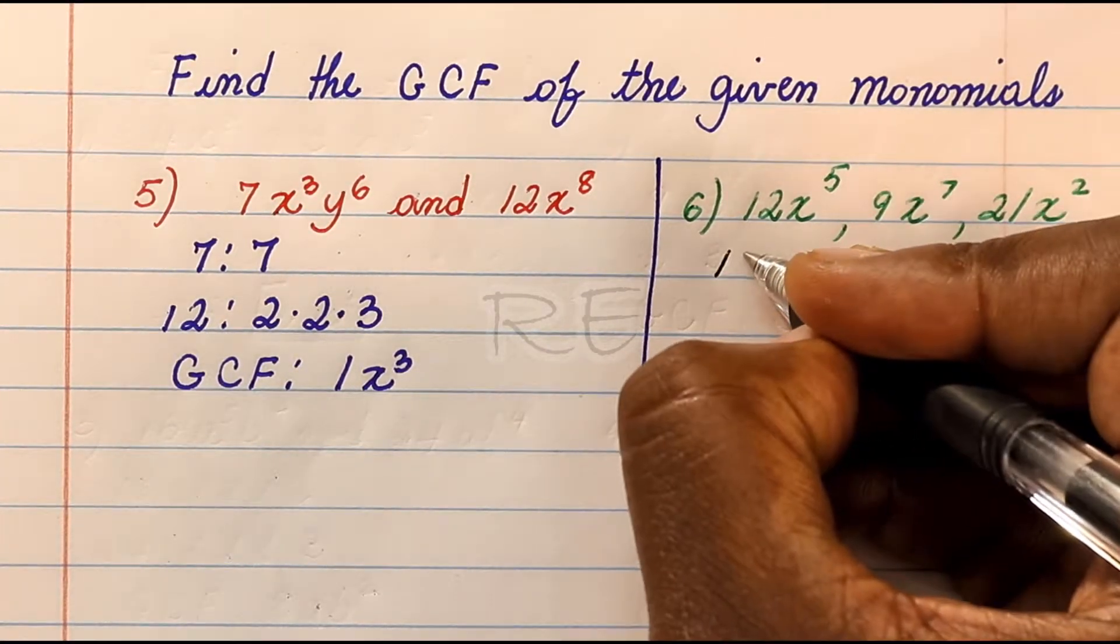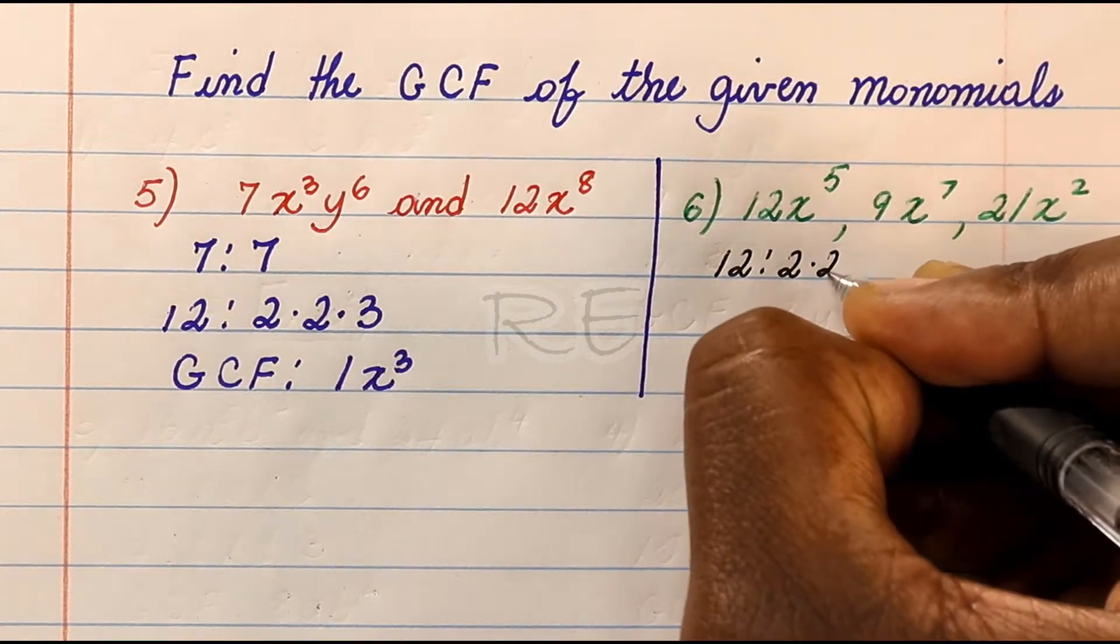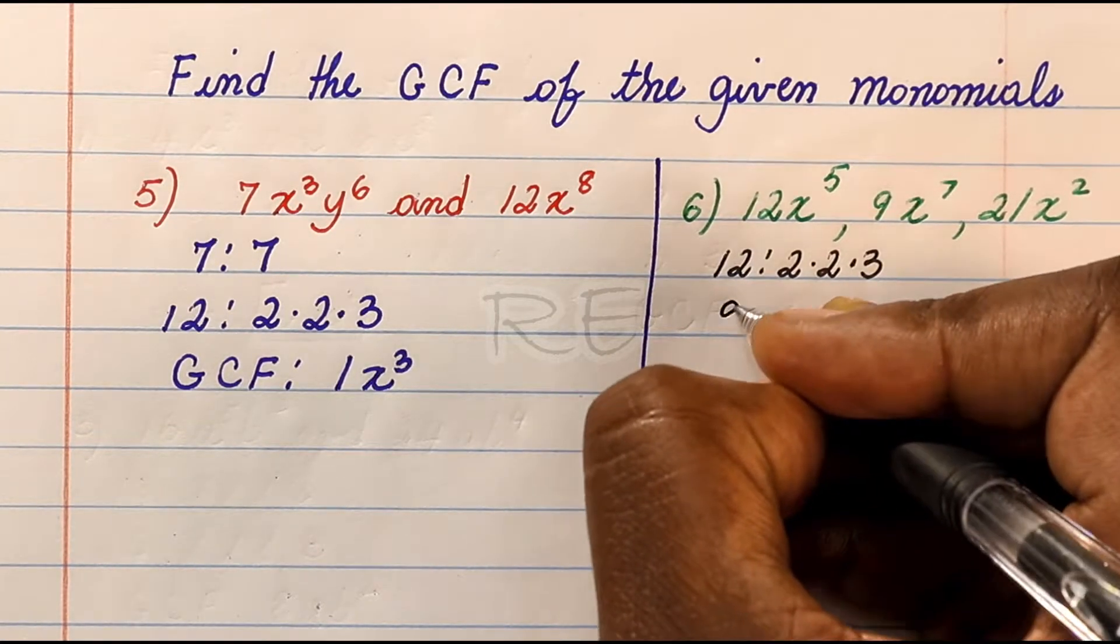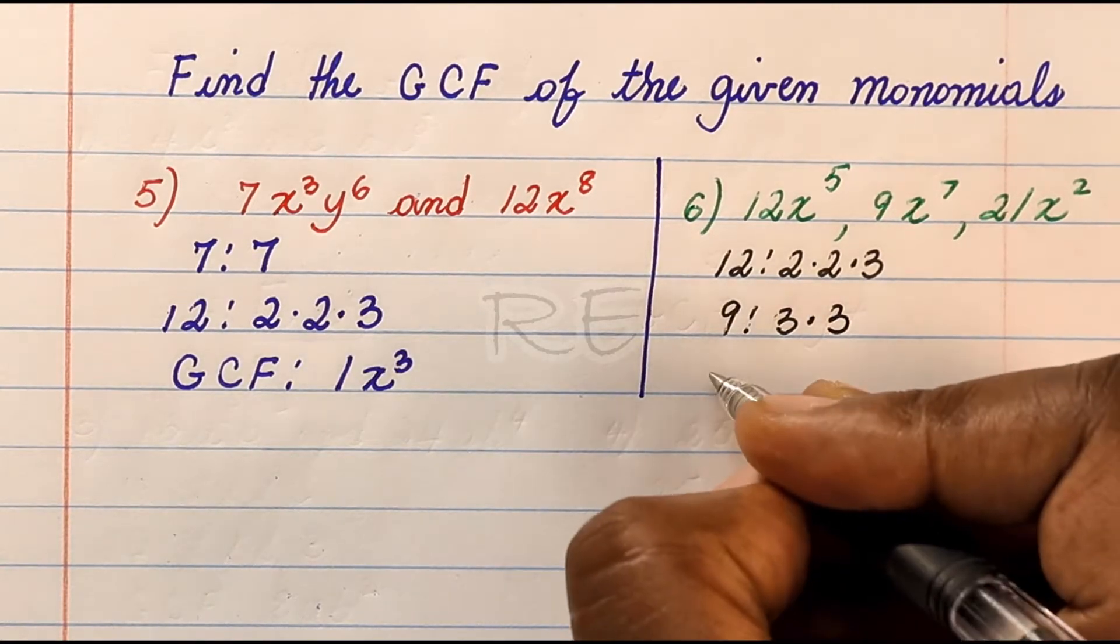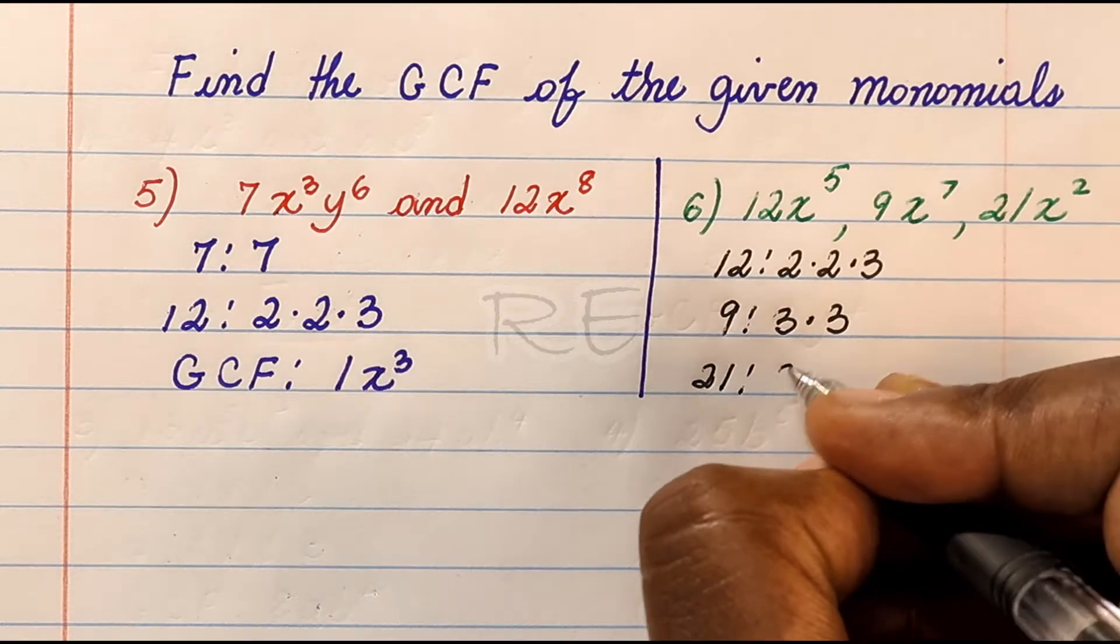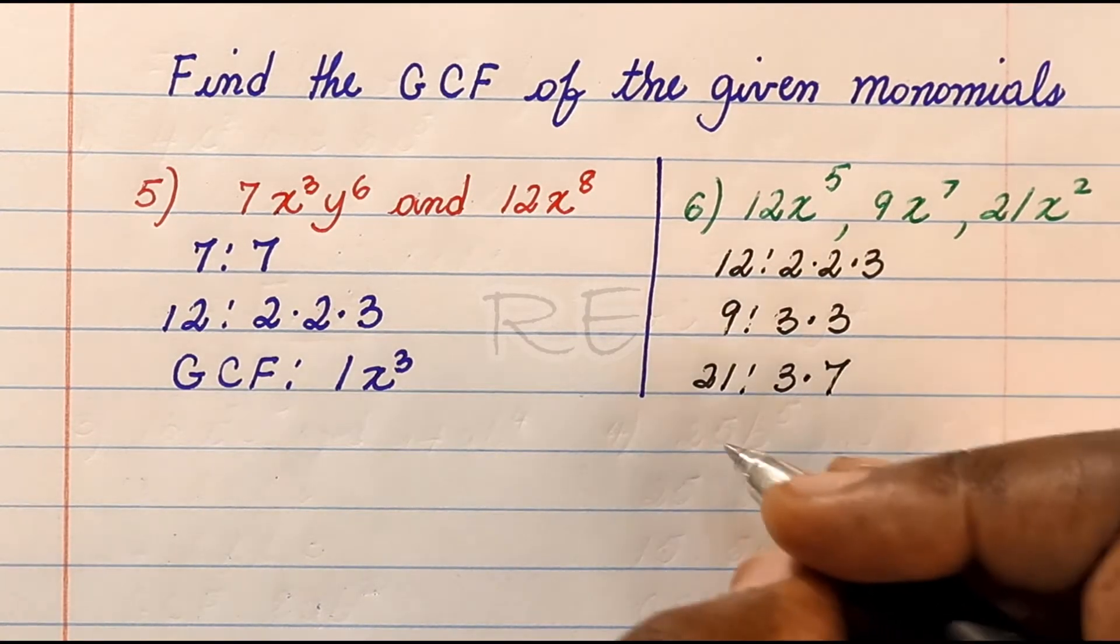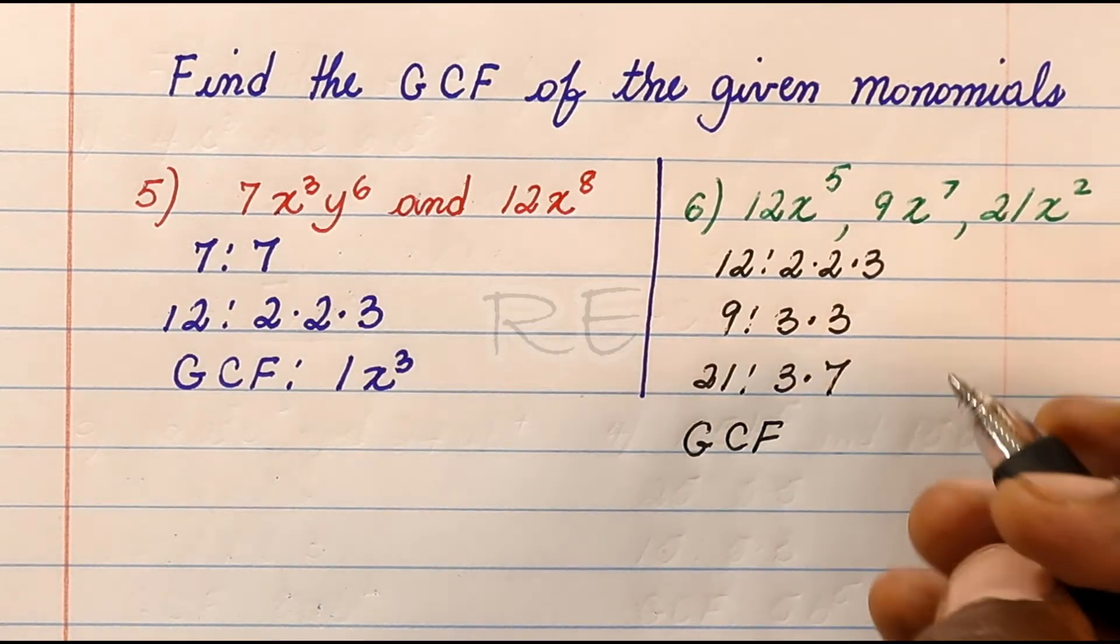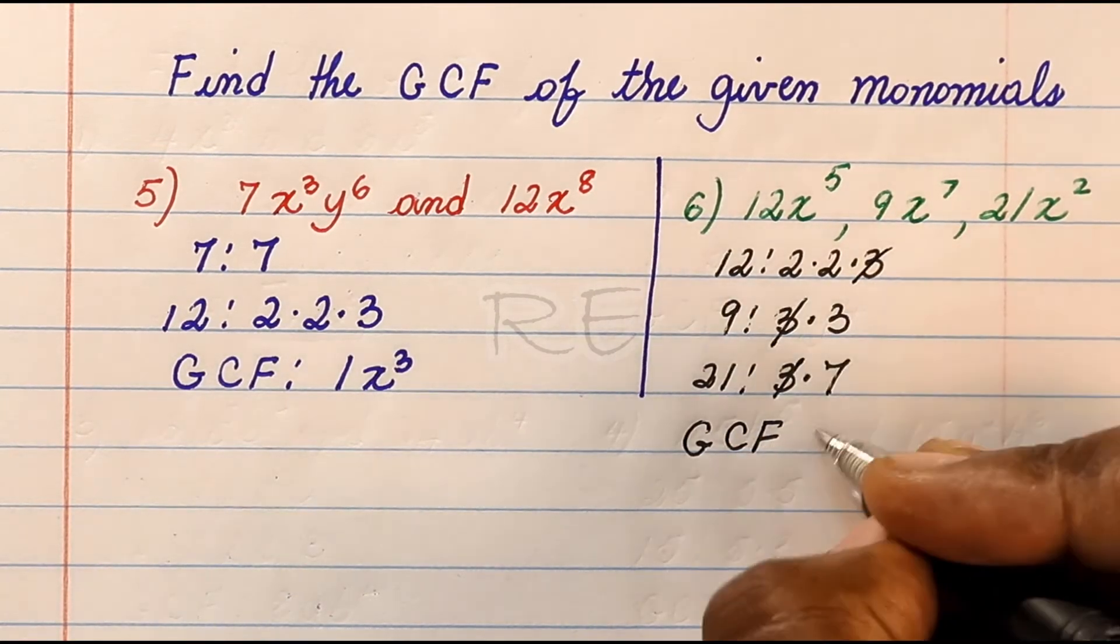Between 12, 9, and 21: 12 is 2 times 2 times 3, 9 is 3 times 3, 21 is 3 times 7. So the GCF, the largest number that they share as a factor, is 3.